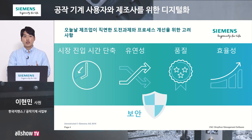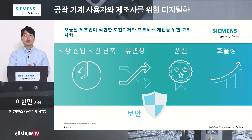이러한 패러다임의 변화는 제조업에서도 여러 숙제를 안겨주고 있습니다. 시장 진입시간 단축, 유연성과 효율성 확보, 그러면서도 품질을 최고 수준으로 유지해야 하는 도전과제들이 있습니다. 다품종 소량 생산 트렌드에 효과적으로 대응하는 방법과 새로운 모델의 공작기계 개발 기간을 단축하는 방법을 고민하고 있습니다. 지멘스의 디지털 트윈 솔루션이 두 가지 관점에서 어떻게 적용되는지 살펴보겠습니다.